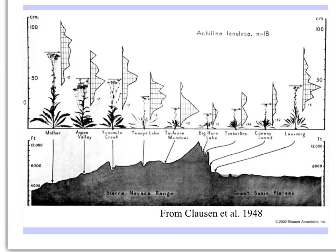This is a beautiful figure from the original Clausen et al. work. It shows the data from each site with the silhouette of the average plant, and next to each plant a distribution of all individuals — their heights — as a frequency distribution. The lower-elevation west coast sites are taller with lots of flowers. As you go higher in elevation, the plants get smaller and less is allocated to flowering. These are data for the yarrow, Achillea lanulosa.